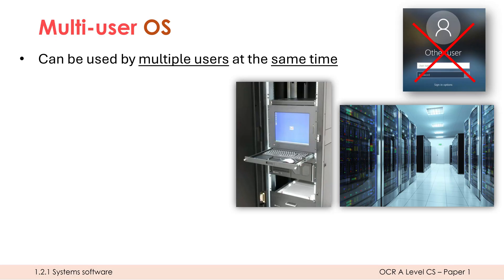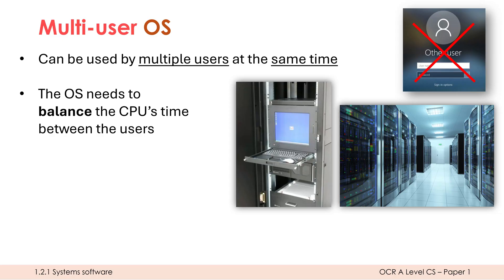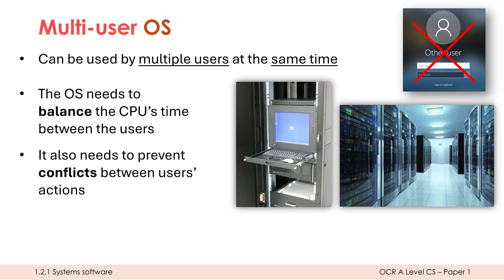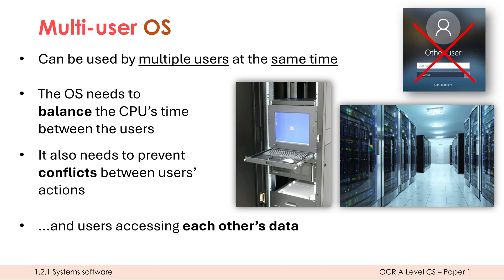Users might also access the server remotely through the internet. These OSs are quite complicated because they need to balance the CPU's time between users, with fairness depending on user importance. They also need to prevent conflicts between users' actions — something we'll look at later in relation to record locking — to avoid issues where users access the same file simultaneously. For security, users must not be able to access each other's data held in RAM.